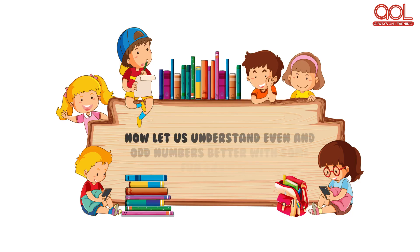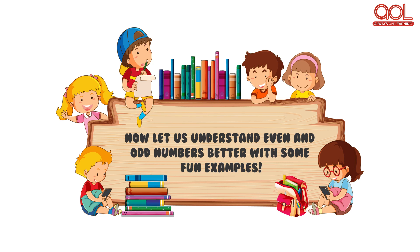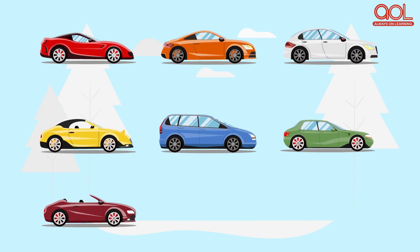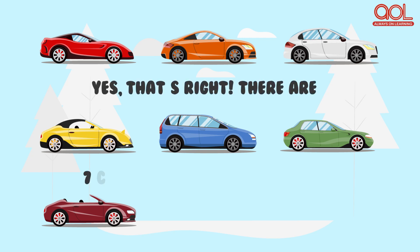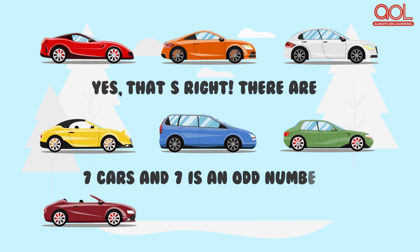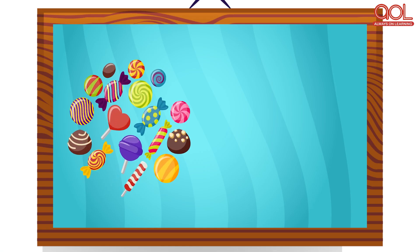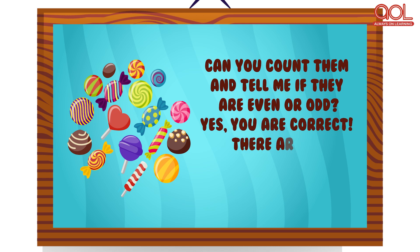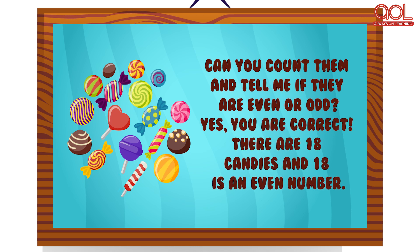Now, let us understand even and odd numbers better with some fun examples. Here are some cool cars. Can you count them and tell me if they are even or odd? Yes, that's right! There are 7 cars and 7 is an odd number. Here are some delicious candies. Can you count them and tell me if they are even or odd? Yes, you are correct! There are 18 candies and 18 is an even number.